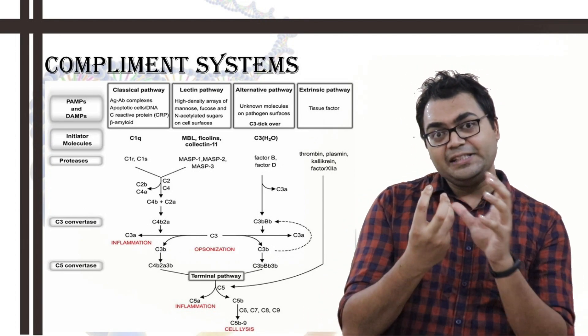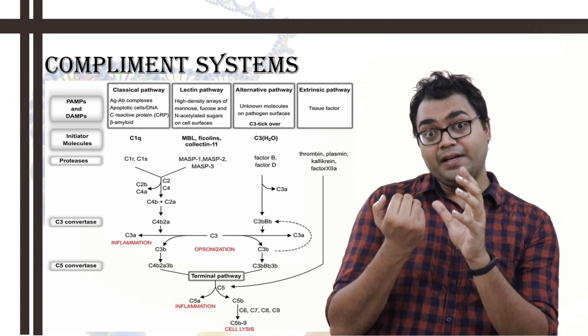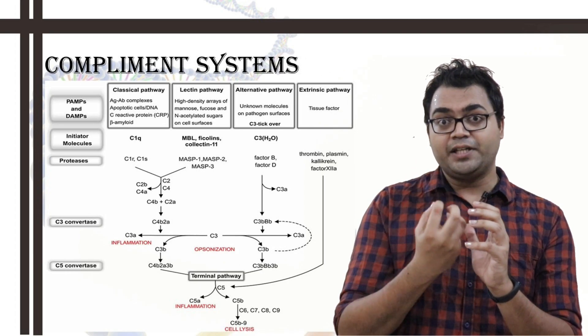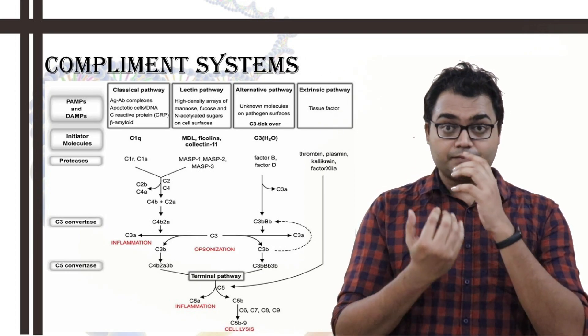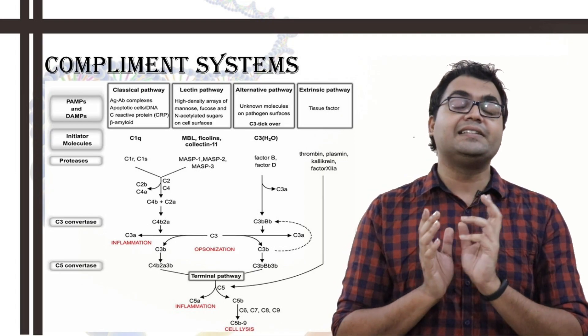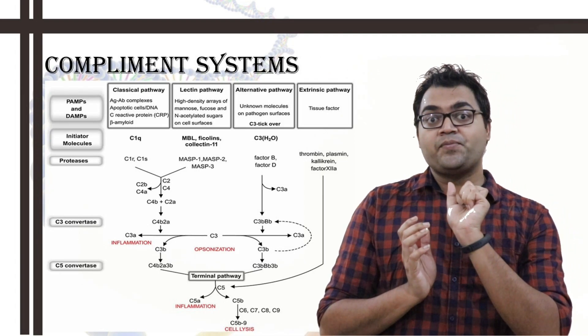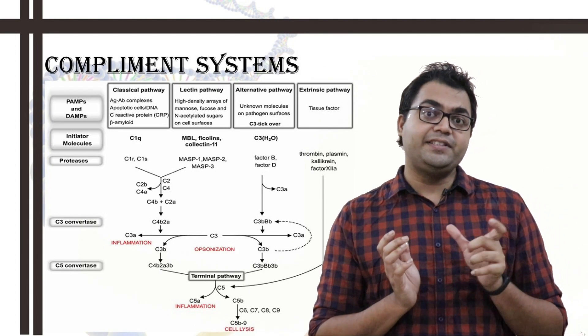To C4b, C2 comes and binds, and then C1s again cleaves the C2, the C2 protein present in the serum. Now, after C2 is cleaved, there is an exception. In this case, the C2b is a smaller fragment, and C2a has enzymatic activity and a bigger fragment.